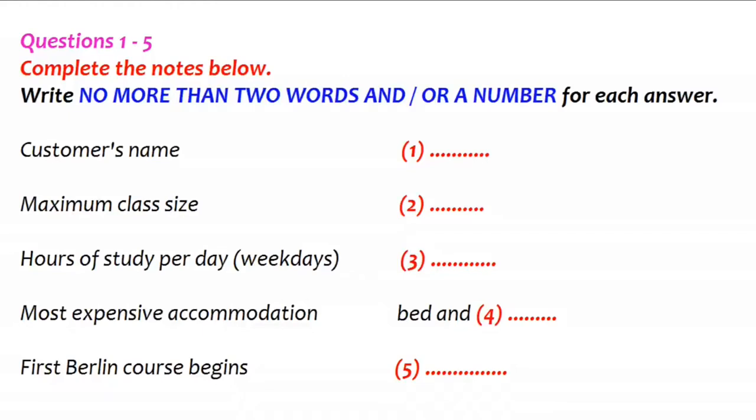You will see that there is an example that has been done for you. On this occasion only, the conversation relating to this will be played first. Good morning, Borgheimer Language Courses. How may I help you? Oh yes, I contacted you some time ago about following a German course in Germany and you advised me to take your placement test before we go any further. Well, I've done that now, so I'd like to go ahead with booking the course for this summer, if that's possible. Certainly, sir. You said you took the placement test. What was the result? I was placed at the O3 level. O3. Right. That's lower intermediate. Fine, mister. The answer is level three or lower intermediate, so the course level has been filled in for you. Now we shall begin. You should answer the questions as you listen, because you will not hear the recording a second time. Listen carefully and answer questions one to five.